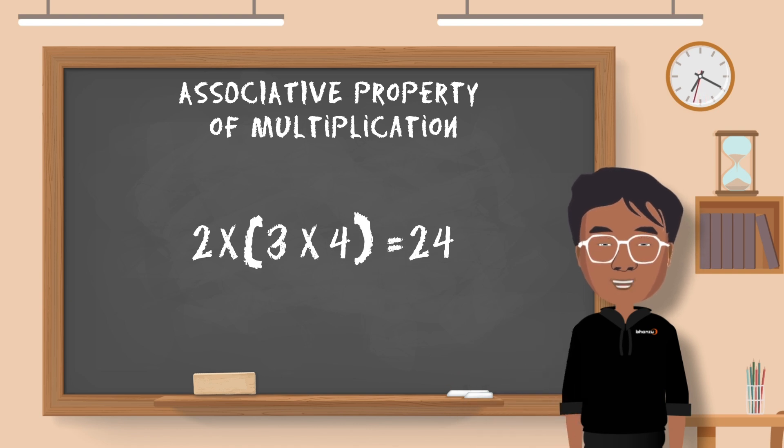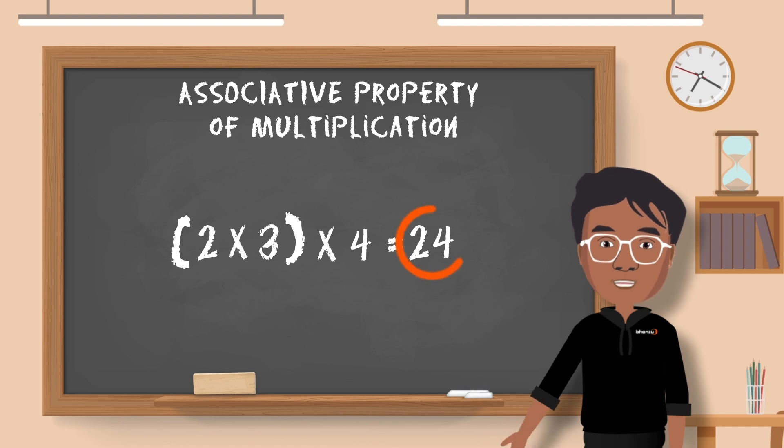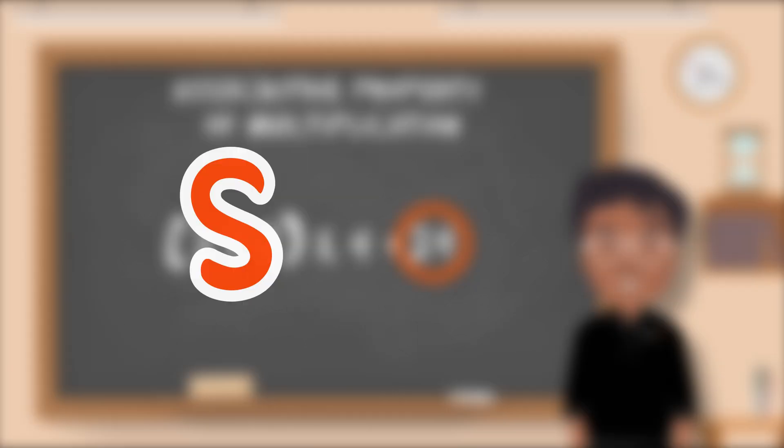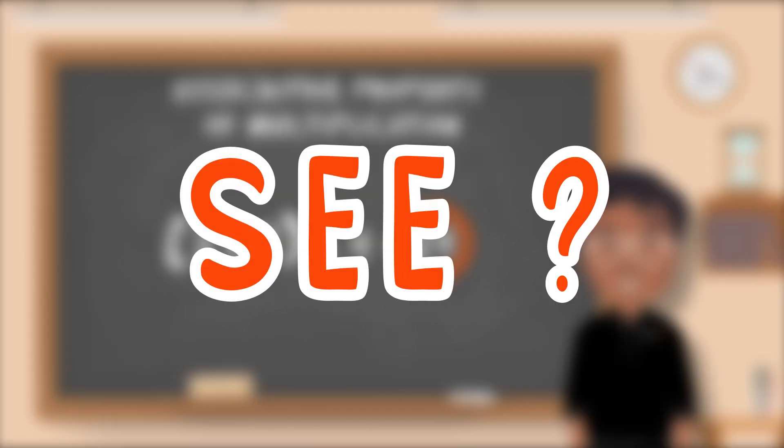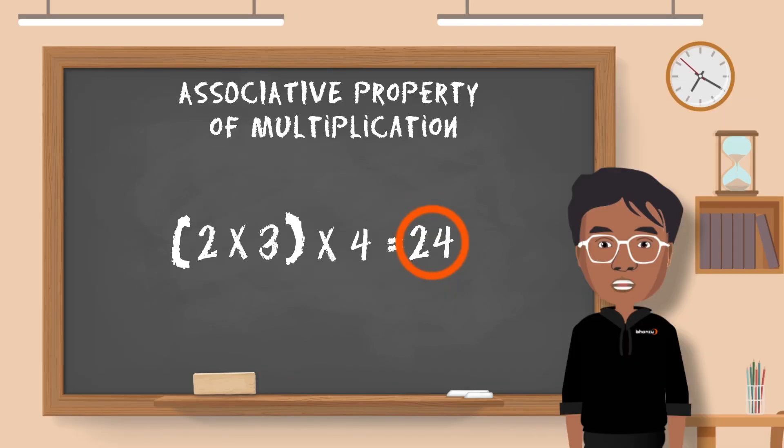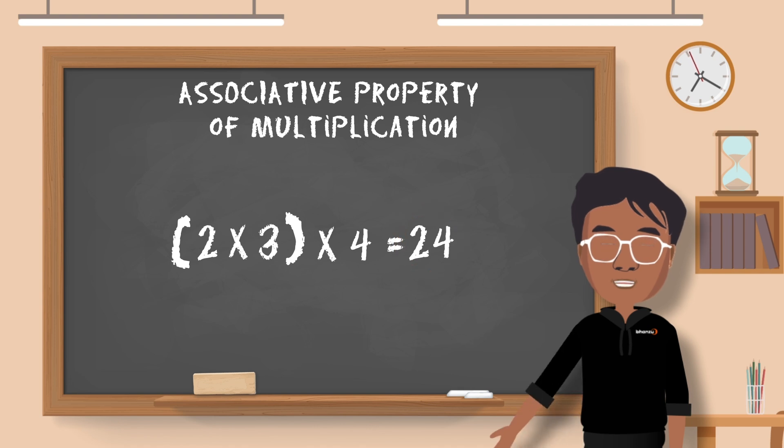But what if we change the position of the brackets or group the numbers in a different manner? Say 2 multiplied by 3 multiplied by 4 but this time it's 2 and 3 which are in the brackets. Even that's 24. See, the result in both the cases is the same. Hence we can associate the numbers differently to still achieve the same product.